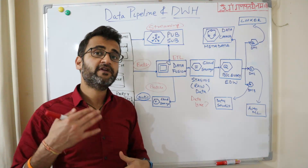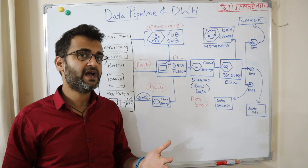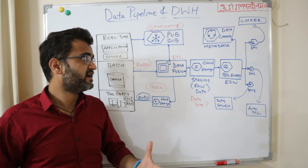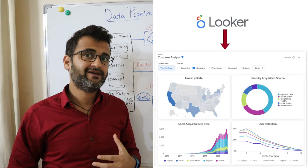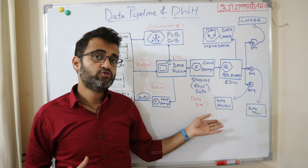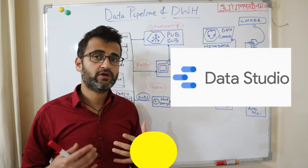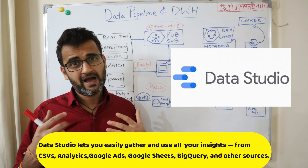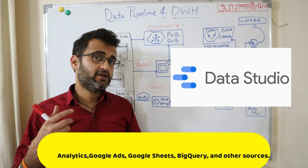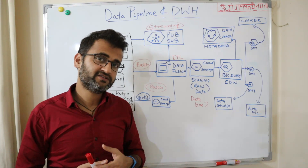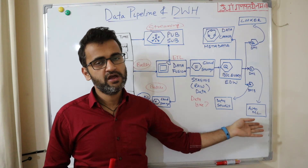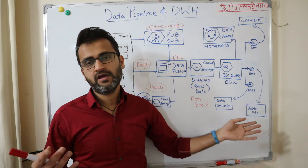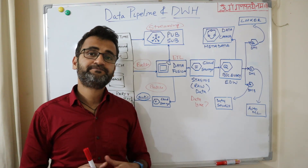Once you have all your data marts, you can look at different products for consumption. In our on-prem solution we were using Tableau — we can use it here as well — but I have also included Looker, a company now acquired by Google, which lets you create very good dashboards. Google Data Studio is another product that lets you create analytical dashboards quickly and connects directly with all BigQuery datasets. For machine learning, you have Google AutoML, where you can put data from your data marts into automated machine learning models.